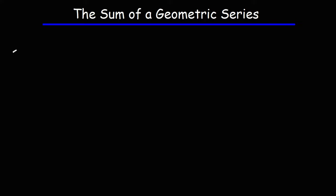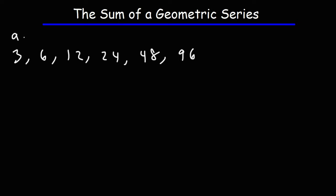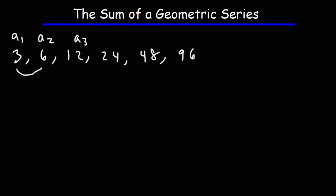Let's start with a geometric sequence. Let's say we have the sequence 3, 6, 12, 24, 48, 96, and so forth. 3 is the first term, 6 is the second term, 12 is the third term. The common ratio is 2. You need to multiply the first term by 2 to get the second term: 3 times 2 is 6, 6 times 2 is 12, 12 times 2 is 24. So we have a common ratio of 2.